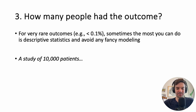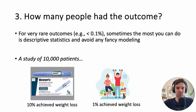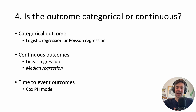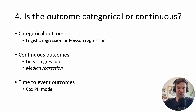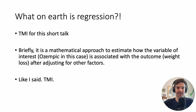Let's say we have 10,000 patients: 10% achieved weight loss with Ozempic, and 1% with diet and exercise. When comparing outcomes between groups, ask whether your outcome is categorical or continuous — that determines which type of regression to perform. If categorical, you'd probably want logistic regression. Regression is a mathematical way to estimate how the variable of interest — here, Ozempic — is associated with weight loss after adjusting for other factors. We'll have a whole separate talk dedicated to regression.